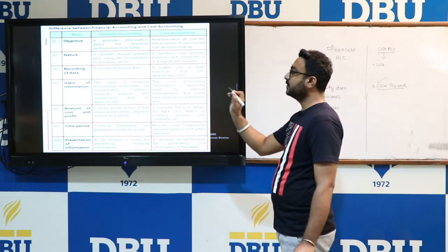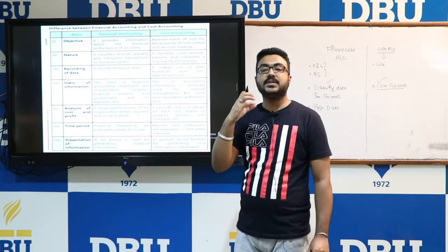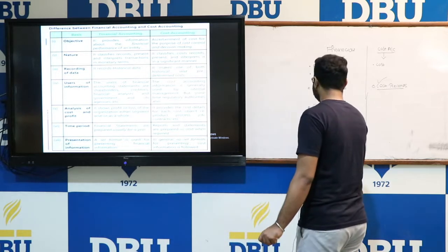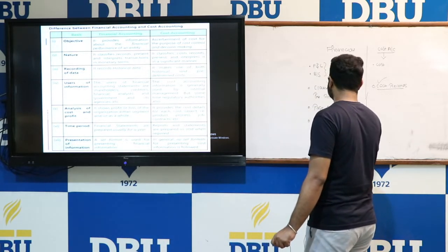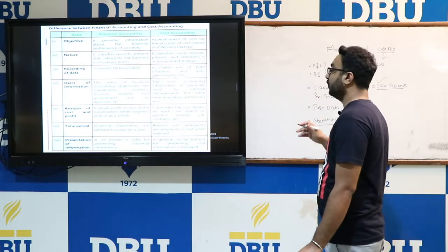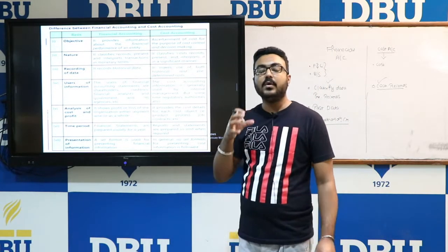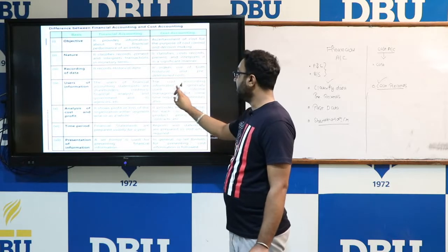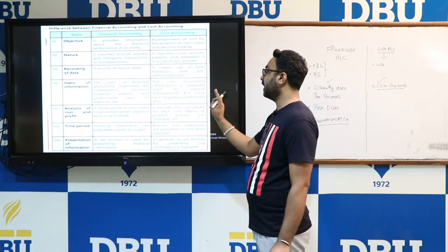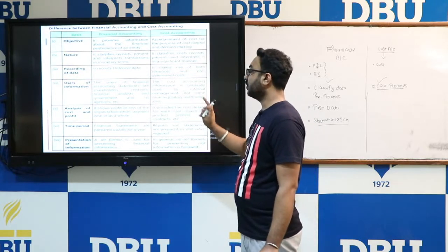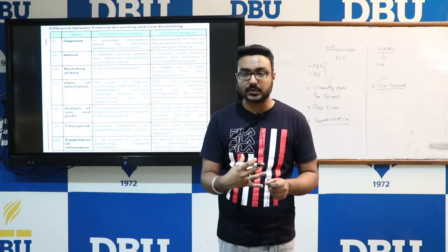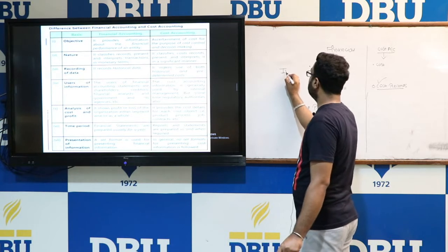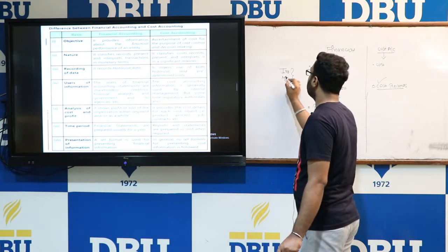The next basis is users of information — who uses the information. Under financial accounting, the users are shareholders and creditors — external parties who make analysis based on the provided accounting information. Cost accounting information is generally used by internal management, though sometimes regulatory authorities also use it.